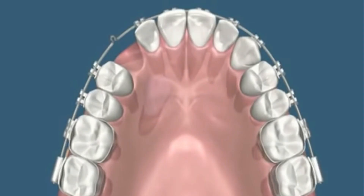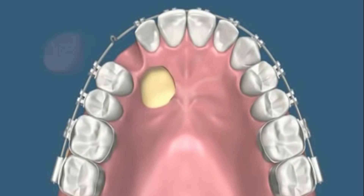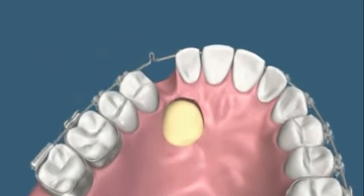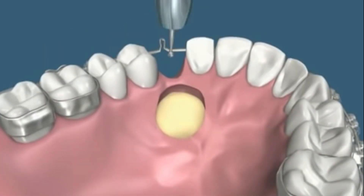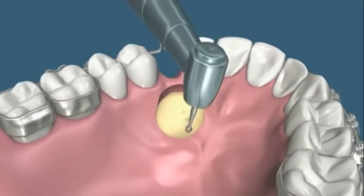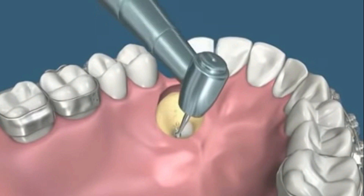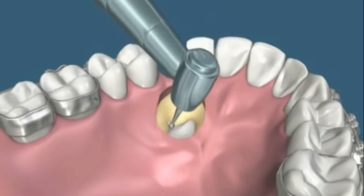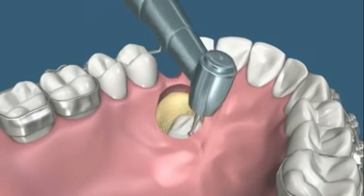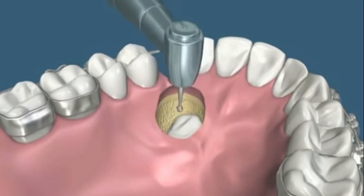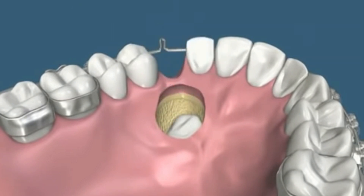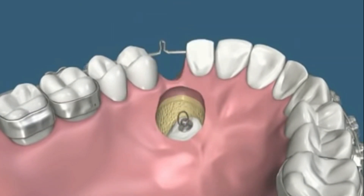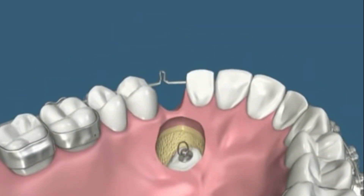The surgical procedure is performed by first raising a flap on the palatal mucosa. With the help of a micromotor surgical handpiece and a round burr, the bone above the impacted canine is removed and the tooth surface is exposed, as seen in this video.